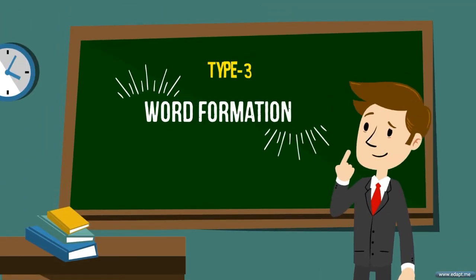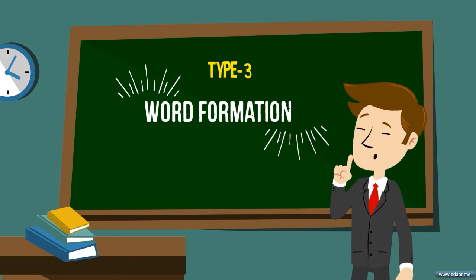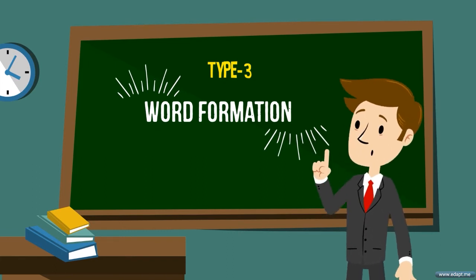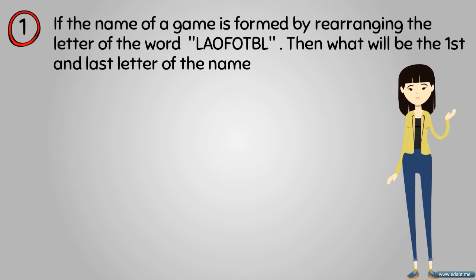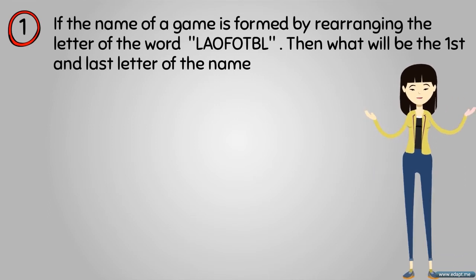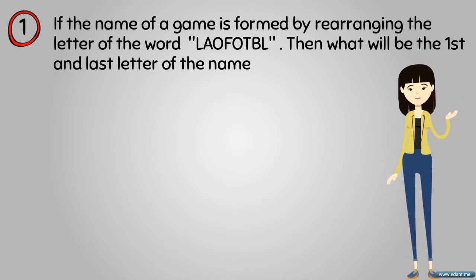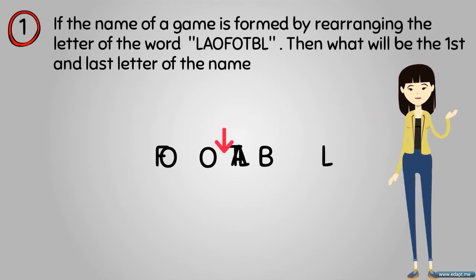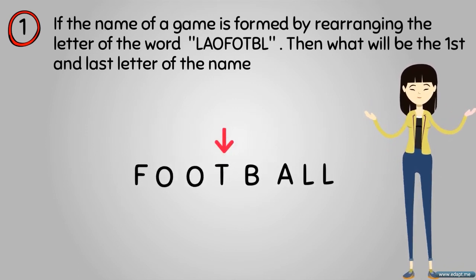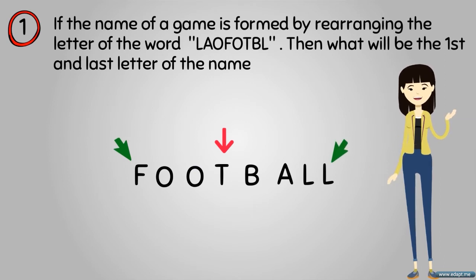Type 3: problems related to word formation. In this type, a meaningful word must be found by rearranging given letters. For example, if the name of a game is formed by rearranging the letters of the word 'LAOFOTBL', rearranging gives FOOTBALL. So the first and last letters will be F and L.